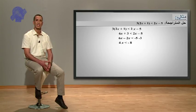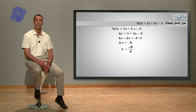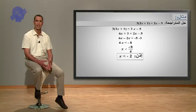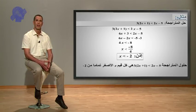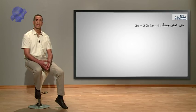بعد تبسيط تصبح 4X أصغر تماما من ناقص 8. بقسمة طرفي المتباينة على العدد 4 نتحصل على X أصغر تماما من ناقص 8 على 4، إذن X أصغر تماما من ناقص 2. حلول المتراجحة 3(2X زائد 1) أصغر تماما من 2X ناقص 5 هي كل قيم X الأصغر تماما من ناقص 2.